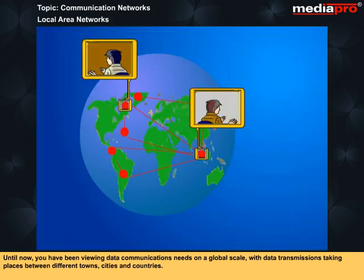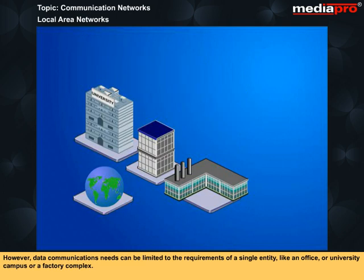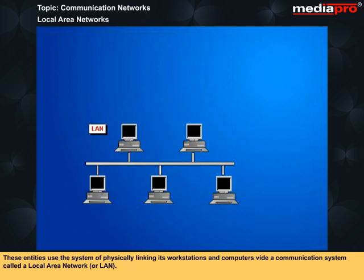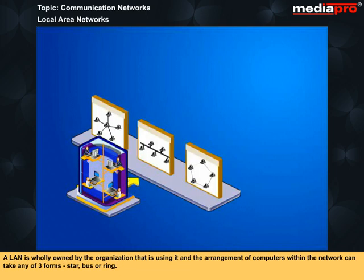Until now, data communications needs were viewed on a global scale with data transmissions taking place between different towns, cities, and countries. However, data communications needs can be limited to the requirements of a single entity like an office, university campus, or factory complex. In such cases, data transfers are restricted between computers, workstations, and other devices located within a compact, geographically defined area. These entities use a system of physically linking workstations and computers via a communications system called a local area network, or LAN.